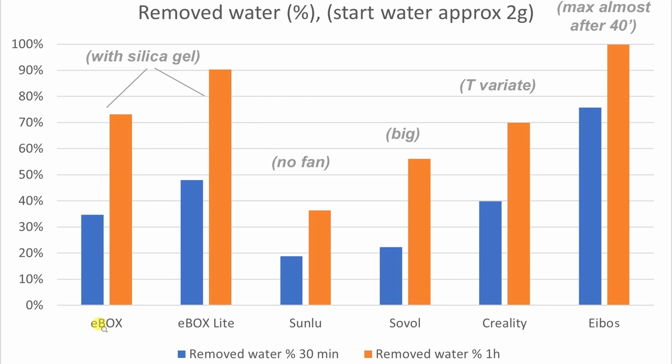We can see that even E-Box Lite performed quite good, but these are the only filament dryers which have the silica gel inside because they have dedicated space for this. The Sunlue doesn't have a fan and doesn't have silica gel inside. You saw a few minutes ago that the moisture stuck on the inside was visible on the walls.